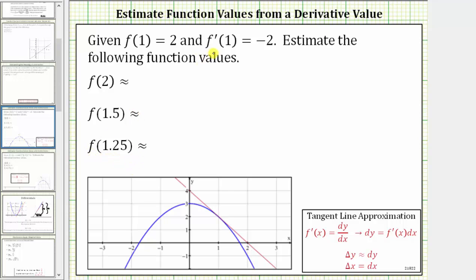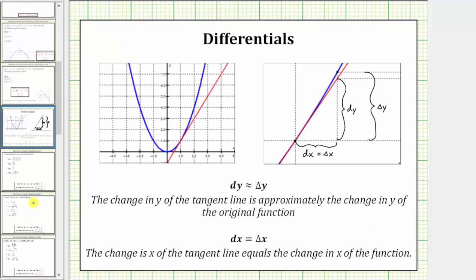From the given information, we will need to use tangent line approximations to approximate these function values. I provided a graph below to help explain the process. For a quick review, the idea is we can use a tangent line to approximate function values as long as we are near the point of tangency. Notice how in this graph, the red line is tangent to the blue function at x equals one.